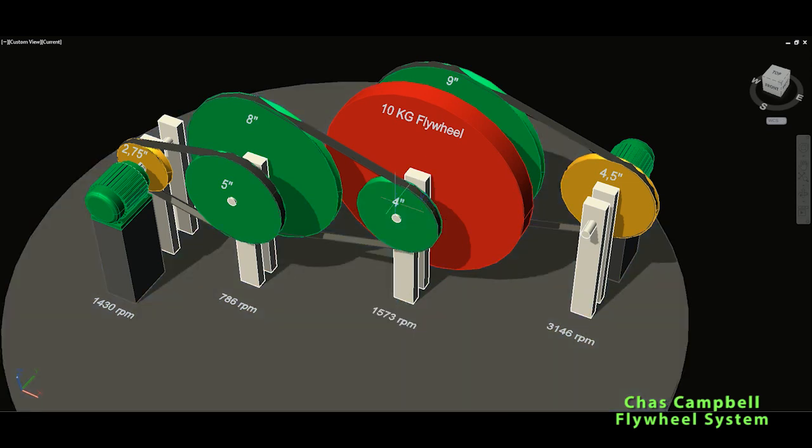Then on this shaft is also a flywheel, 10 kilograms. This is what will give our free energy because of the momentum and the kinetic energy which will be produced by the motor. And then on the same shaft is 9 inches transferred to 4.5 inches which will double the speed to 3146 RPM.